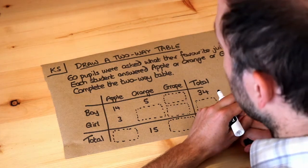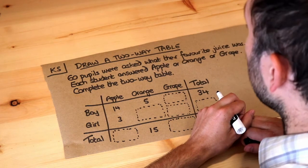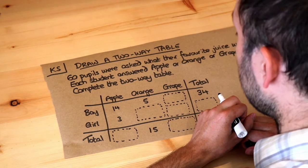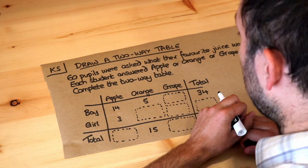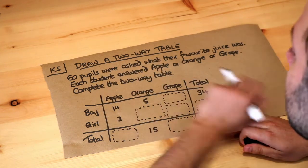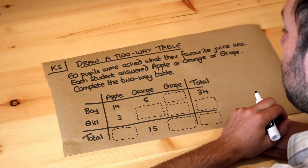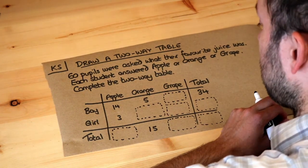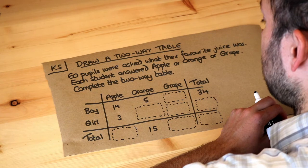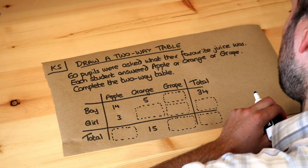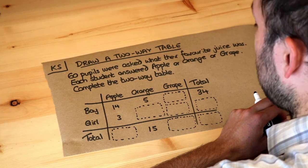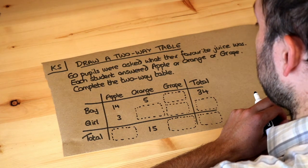Hello and welcome to this Dr. Ross Mass's key skill video on drawing a two-way table. Now we've got this question here: 60 pupils were asked what their favourite juice was. Each student answered apple, orange, or grape. Complete the two-way table.